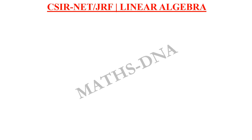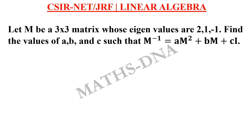Moving on to the question. The question is: let M be a 3×3 matrix whose eigenvalues are 2, 1, and –1. Then find the values of a, b, and c such that M inverse equals aM squared plus bM plus cI, where I denotes the identity matrix of order 3×3.